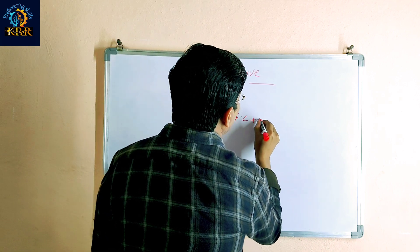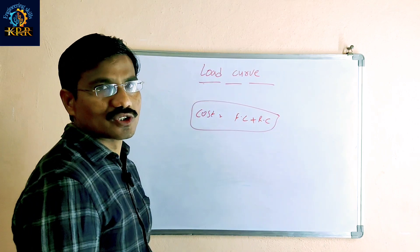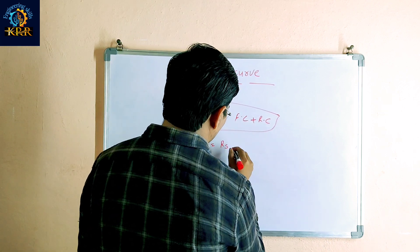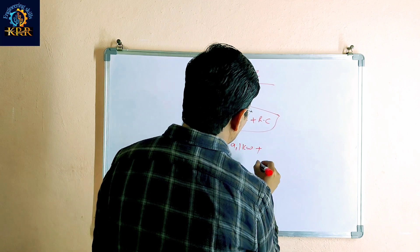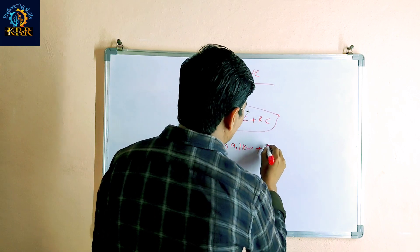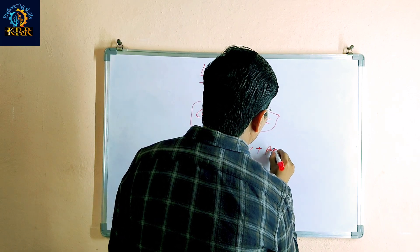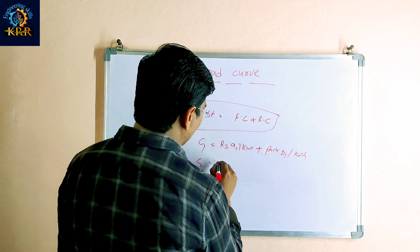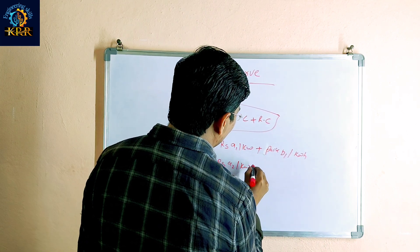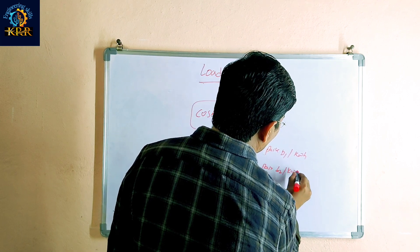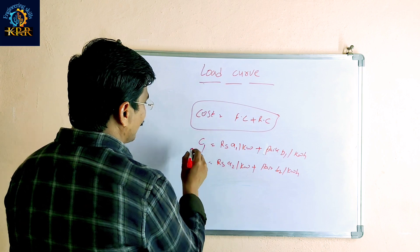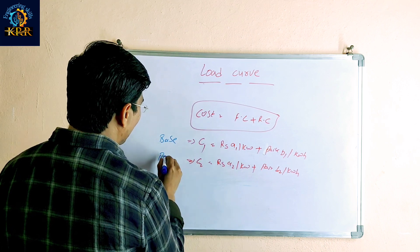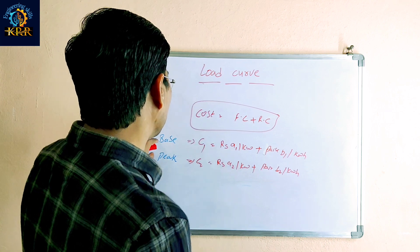The cost equation: cost is equal to fixed cost plus running cost. The cost equation C1 equals Rs. A1 per kW plus B1 paise per kWh. C2 equals Rs. A2 per kW plus B2 paise per kWh. C1 is the cost equation at base load and C2 is the cost equation at peak load.